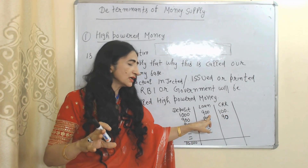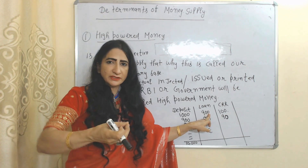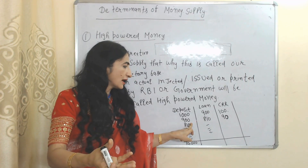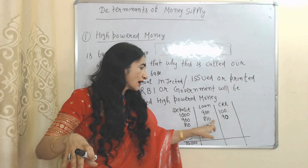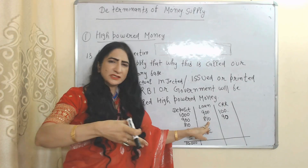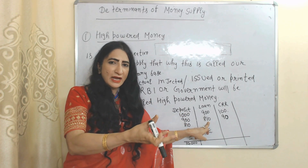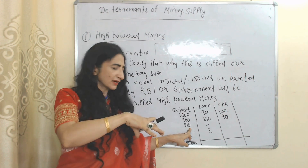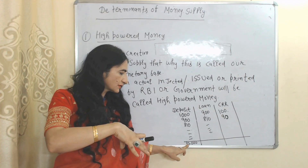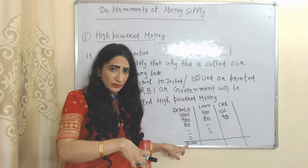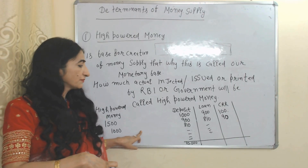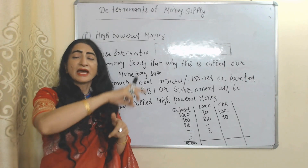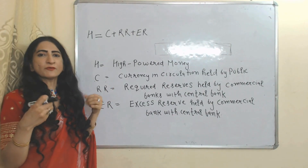1,000 rupees goes to the bank. The bank keeps 100 rupees as reserve and gives 900 rupees as loans. That person purchases something and the shopkeeper deposits 900 rupees back in the bank. The bank keeps 90 rupees as reserve and lends 810 rupees. This process continues, and after some time, the total amount equals 10,000 rupees — so from 1,000 high-powered money, the bank creates 10,000 through credit creation.